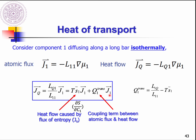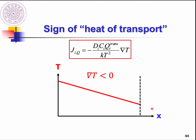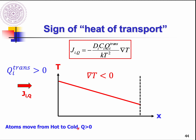I will explain more about the sign of heat of transport using figures. If we apply the temperature gradient such that it is negative on the coordinate, and you already know the heat of transport of your diffusing species is positive, that means the atoms will move from high temperature toward low temperature — to the right-hand side, from the hot side to the cold side. If the heat of transport of your diffusing atoms is negative, the atoms will be pushed from the cold side toward the hot side.